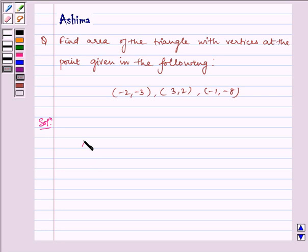Area of a triangle when three vertices are given is given by half into x1, y1, 1, x2, y2, 1, x3, y3, 1.